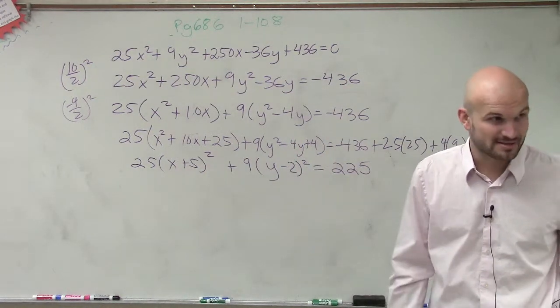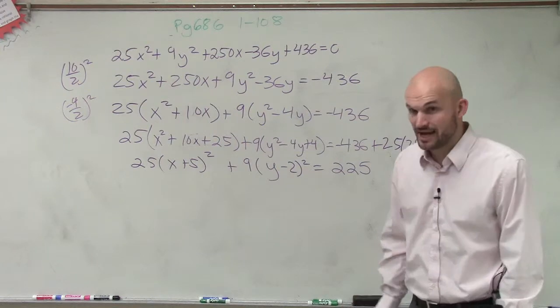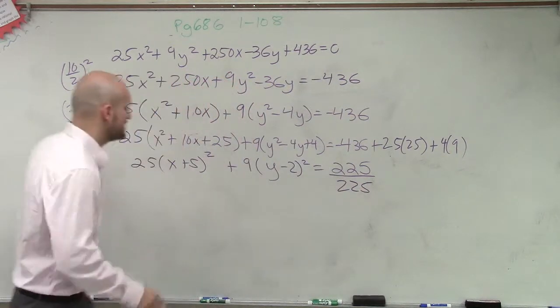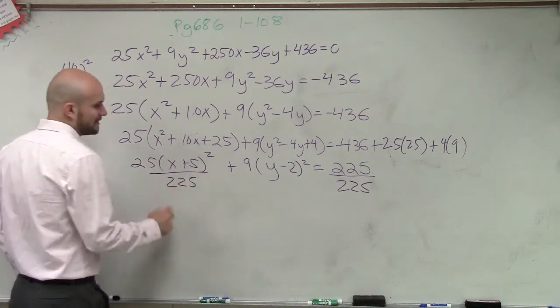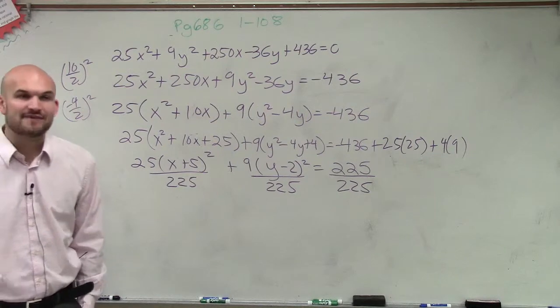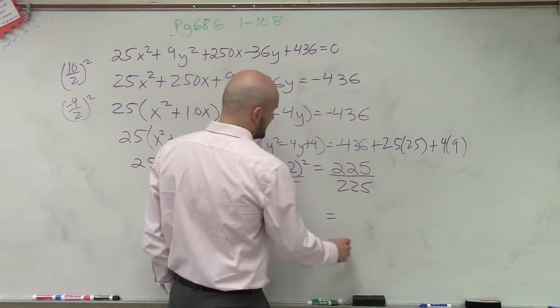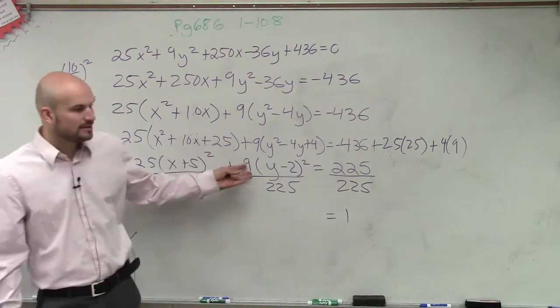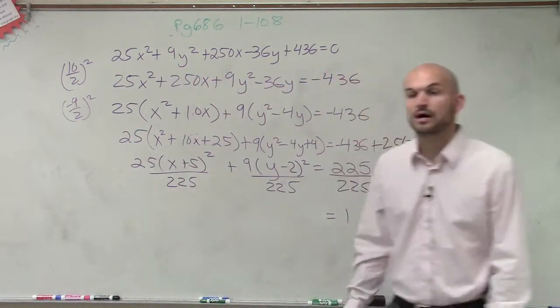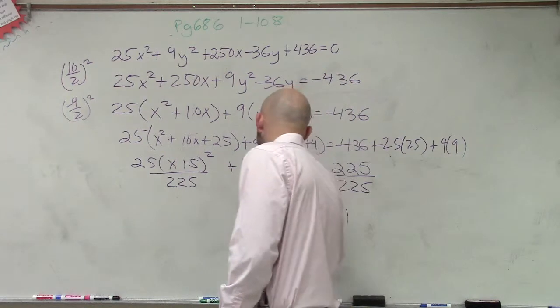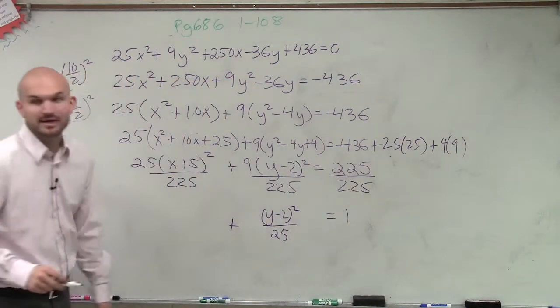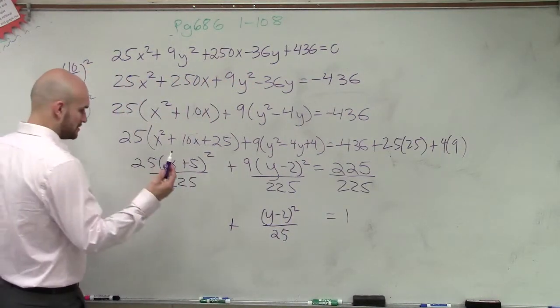So remember, he said, you know, you're equal to 225. You need to be equal to 1. That's what ellipses are equal. They're equal to 1. So they divided by 225 to get it equal to 1, and that means they need to equal 225 over here and 225 over here. So by dividing by 225, now the ellipse equaled 1. And then they reduced 9 over 225. So 225 divided by 9 equals 25. So now I have x plus 5 squared over 9 plus y minus 2 squared over 25 equals 1.